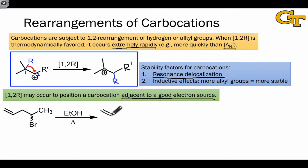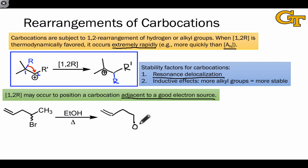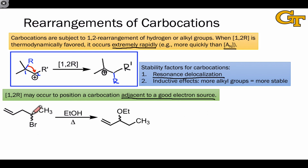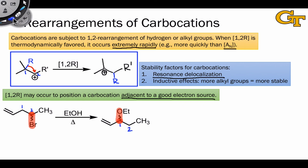Once again, naively we would assume that the major product of this process — which again looks like an SN1 reaction because of the secondary electrophile, weak nucleophile, and heat — is going to involve substitution of bromine for OEt. However, this is not the major product; in fact, it's not observed at all. The major product does come from overall substitution of bromine for OEt, but the carbon to which OEt is connected in the product is not the carbon from which bromine departed. A short atom-mapping exercise reveals these two carbons have a 1,2 relationship, suggesting the intervention of a 1,2 rearrangement step.